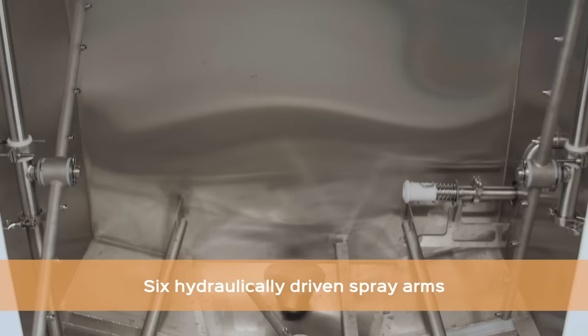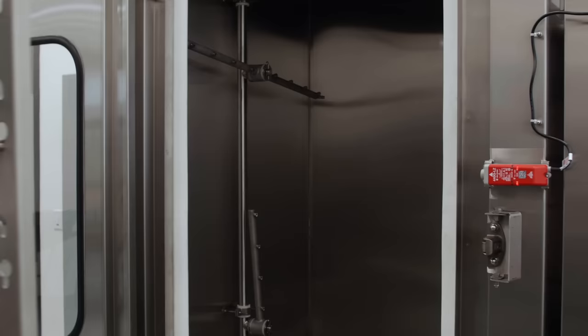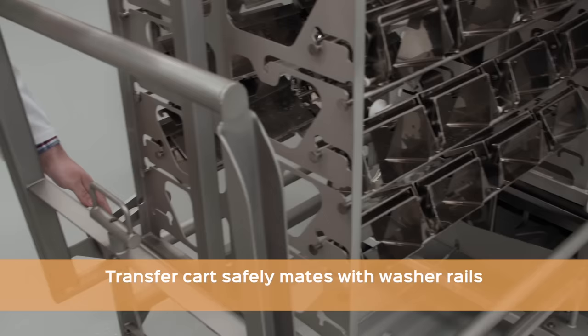Sanamatic custom designs racks to safely transport parts from the equipment to the Sanacab. Operators release the rack to guide it off the cart and into the washer where it latches in place before unlocking the cart for removal.